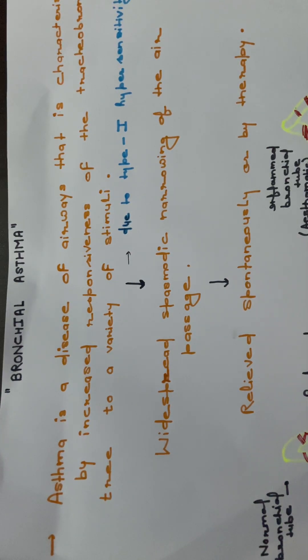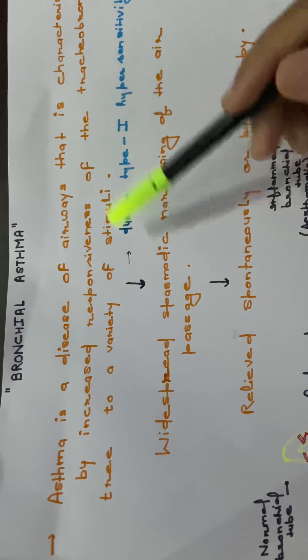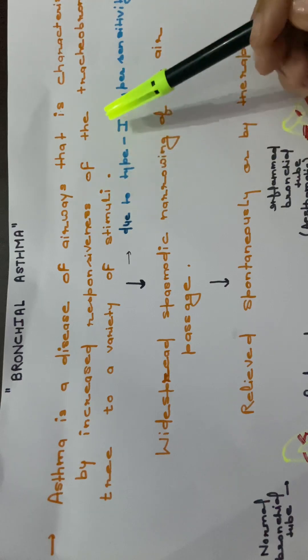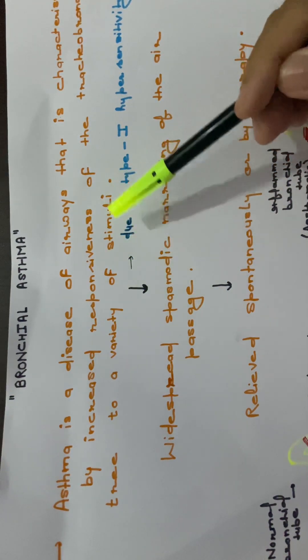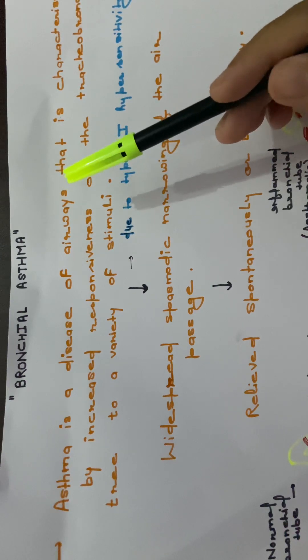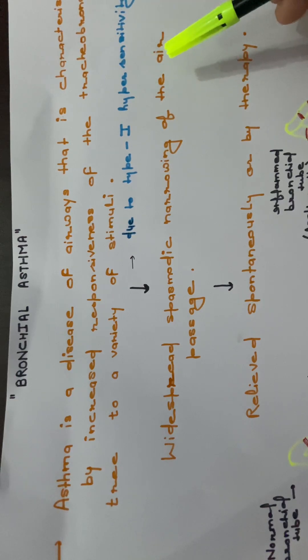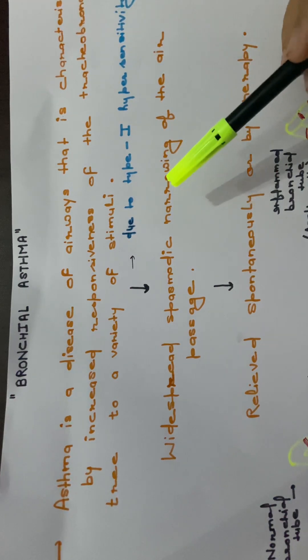Hey guys, welcome to the volume ready course. Let's start with bronchial asthma. Asthma is a disease of airways that is characterized by increased responsiveness of the tracheobronchial tree to a variety of stimuli. The Greek meaning of asthma is difficulty in breathing. It occurs due to type 1 hypersensitivity.